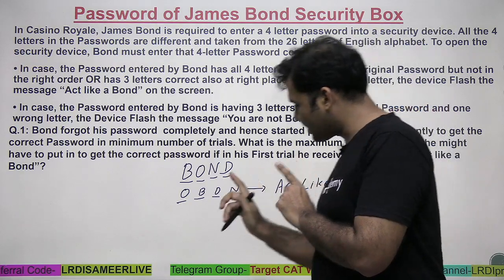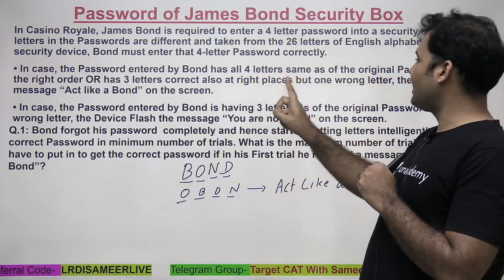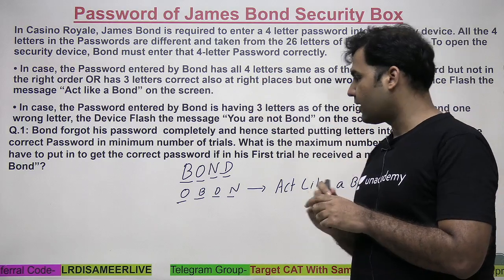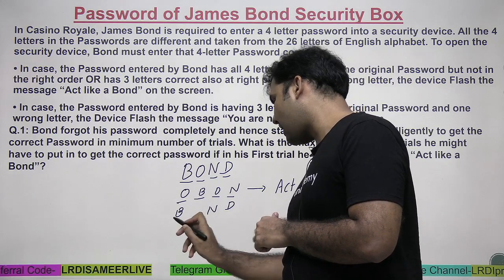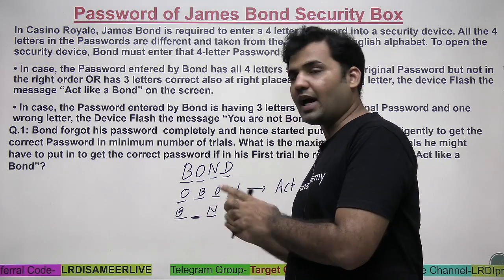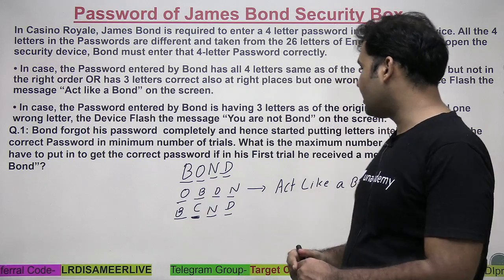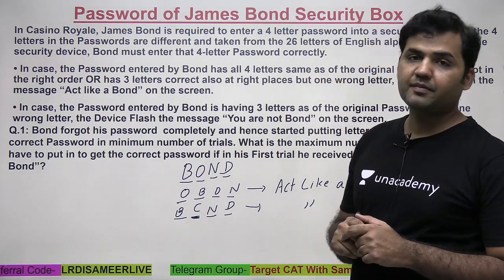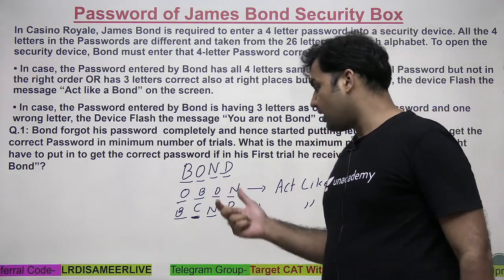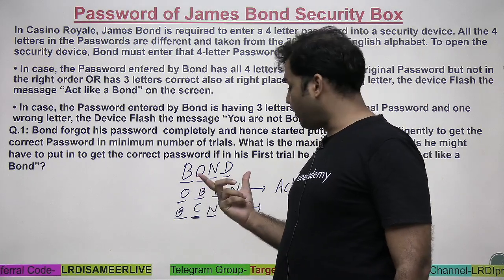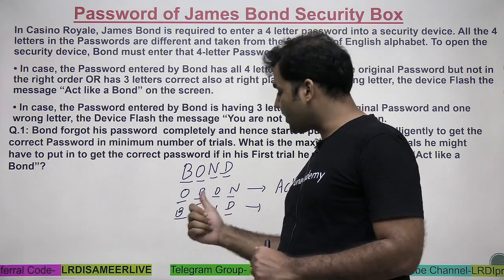'Act like a Bond' is shown in two cases: if the same four letters are used but in a different order, OR if three letters are used at exactly the right positions but one wrong letter is substituted. For example, if B, N, and D are exactly at their own positions but instead of O at the second place, he uses C, the device will again flash 'act like a Bond.'